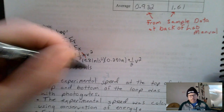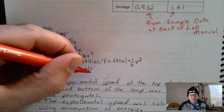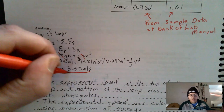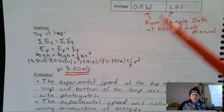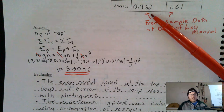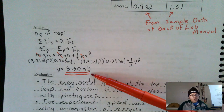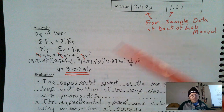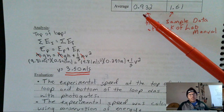So the car should have been going 3.50 meters per second at the top of the loop — that's the theoretical speed. But the experimental speed at the top of the loop was much, much slower — just under 1 meter per second. This is not an isolated system; energy was not conserved. We'll have to discuss why that was.